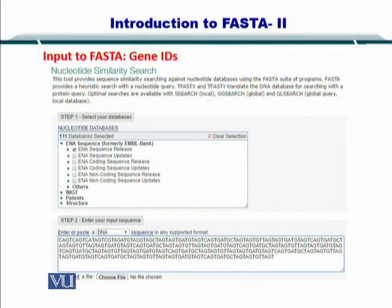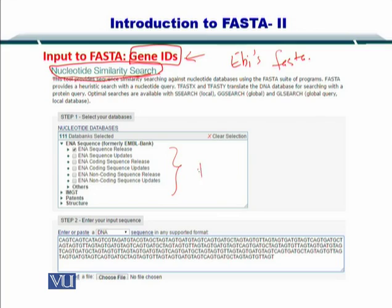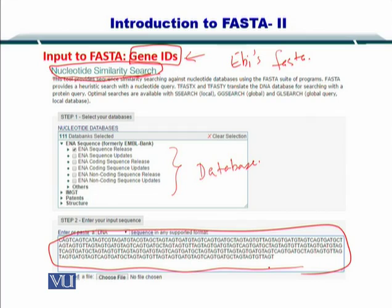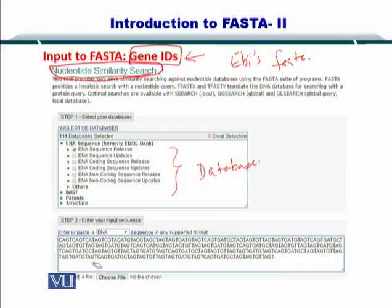To help you visualize things: if you want to do a nucleotide similarity search, the input to FASTA can be gene IDs. You go to the EBI's FASTA web portal and click on nucleotide. Once you select the nucleotide similarity search, you can specify the database you want to compare your sequence with and enter your sequence. There is a drop-down list box which states DNA, and you can also select RNA.